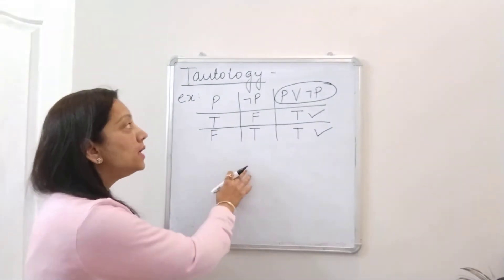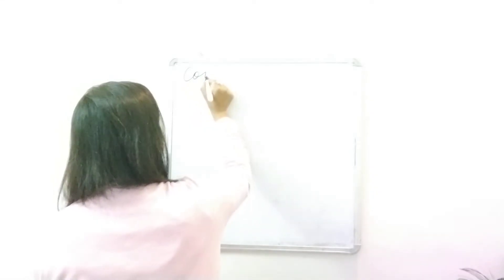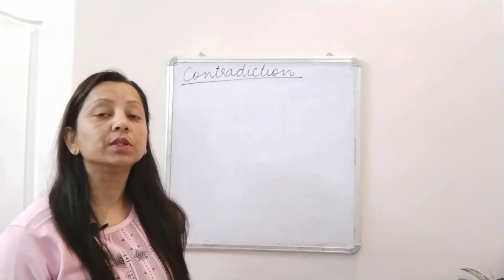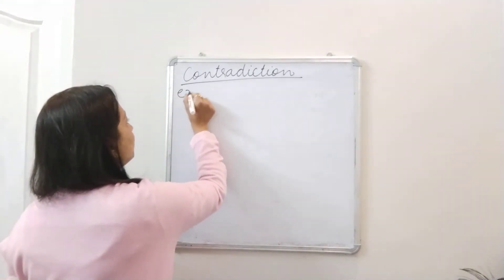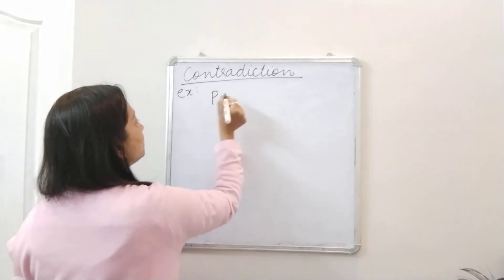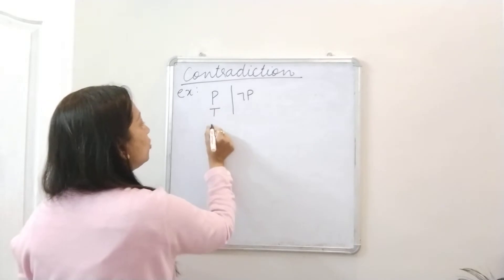That means this is a tautology. Now if I look at a contradiction — what is a contradiction? Contradiction is a compound proposition which is always false. Taking the same example where p is true and false, when p is true then not p will be false, and when p is false then not p will be true.